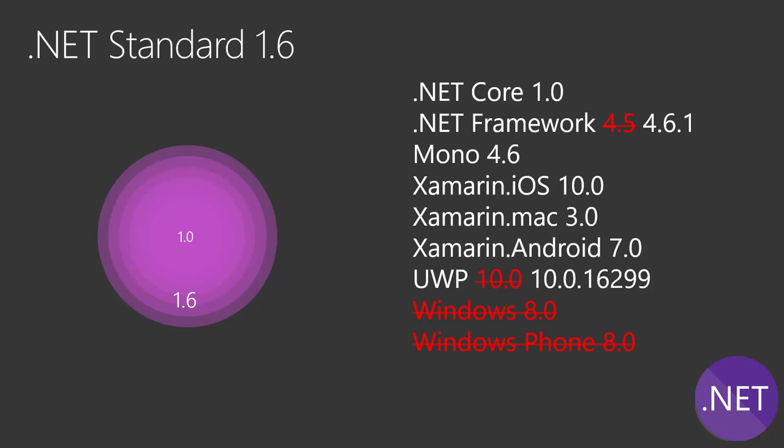What does that mean concretely? If you have a WPF application running in an enterprise environment, and you have a cool library you want to use that's developed using .NET Standard 1.6, well, if your PC has .NET Framework 4.5 installed, it's not going to run. You need to upgrade to 4.6, and that could be an issue in enterprise, because upgrading to .NET 4.6 means upgrading the whole fleet of PCs.